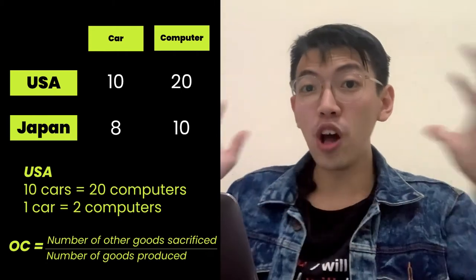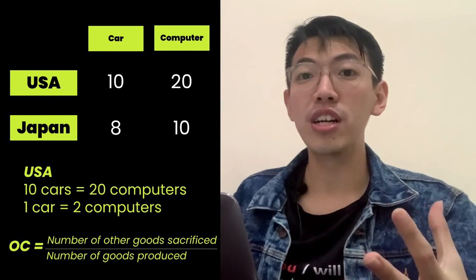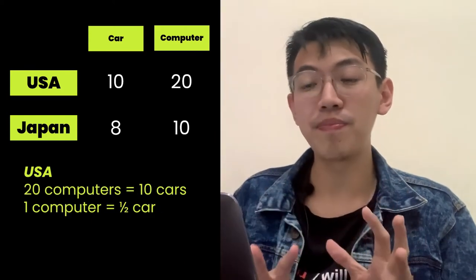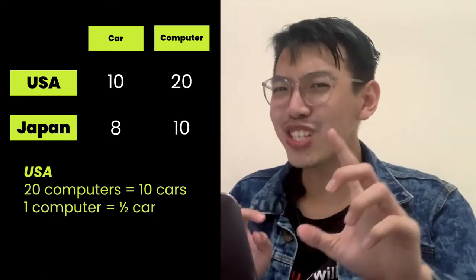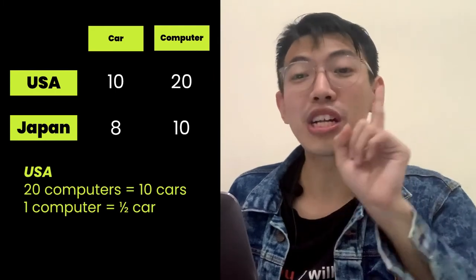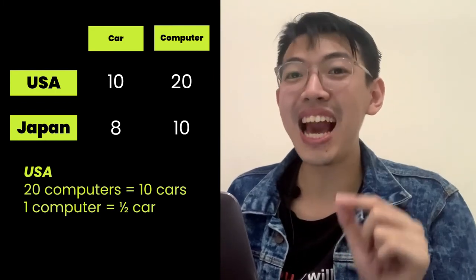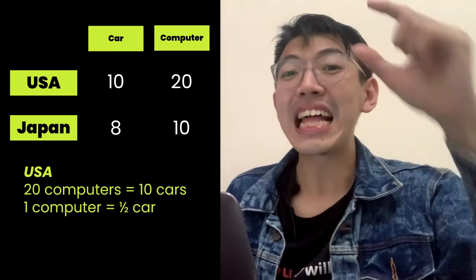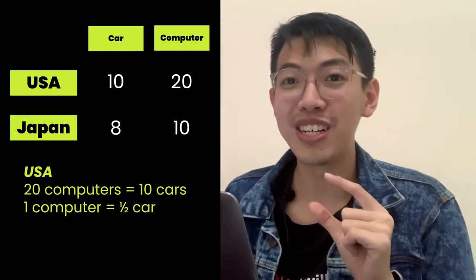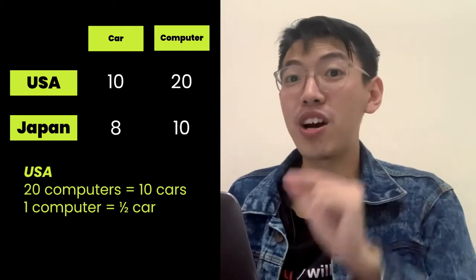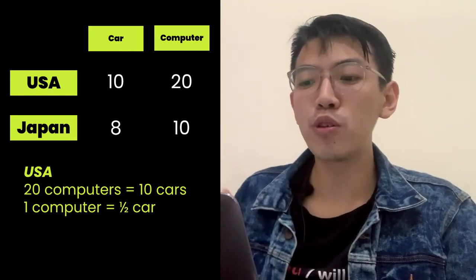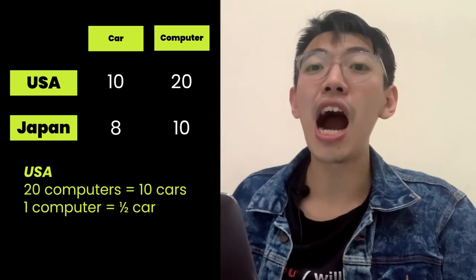Now, if the USA uses all its time to produce computers, it can produce 20 computers but must sacrifice 10 cars. So to produce one computer, the USA sacrifices 10 cars divided by 20 computers, which equals 0.5 cars per computer. The opportunity cost to produce one computer for the USA is 0.5 cars.